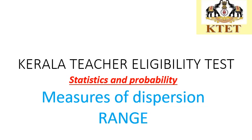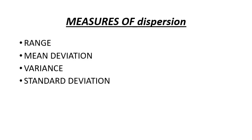So what is the range? Measures of dispersion include: Range, Mean Deviation, Variance and Standard Deviation. We also cover Measures of Position: Quartile Partition and Deciles Position.